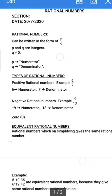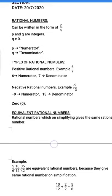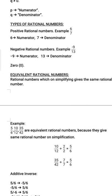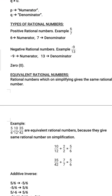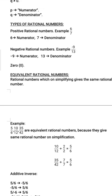The third type of rational number is zero. Zero has no sign — it is neither positive nor negative. Now we come to equivalent rational numbers. Equivalent rational numbers are those which, when we simplify them, give us the same rational number every time. Suppose we have 3 rational numbers: 5 by 6, 10 by 12, and 35 by 42.